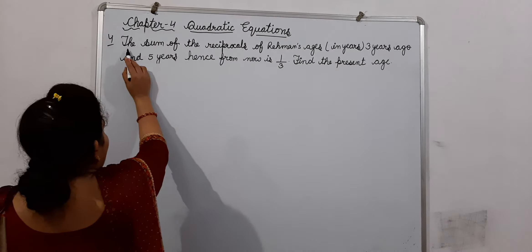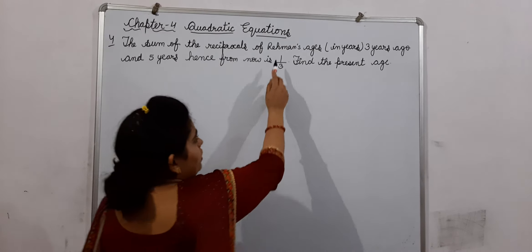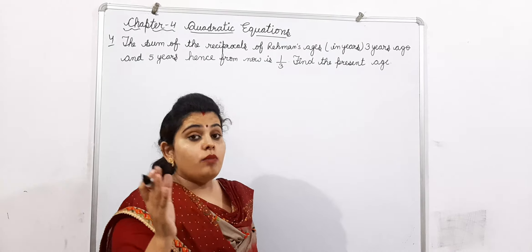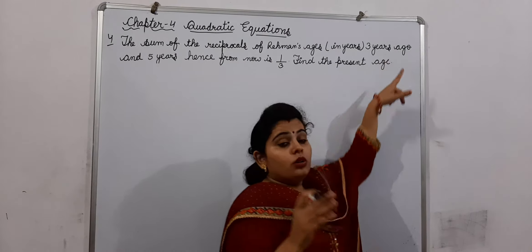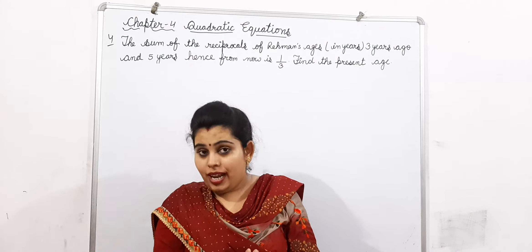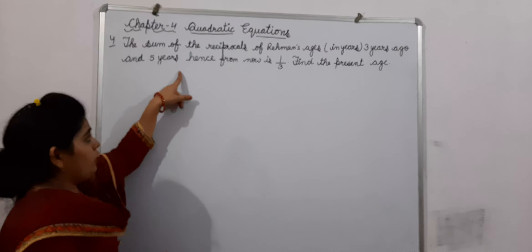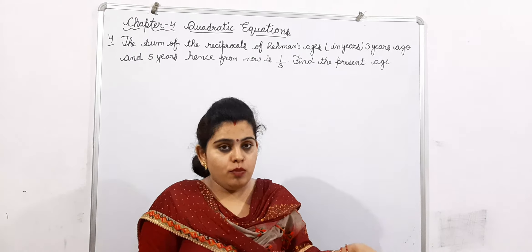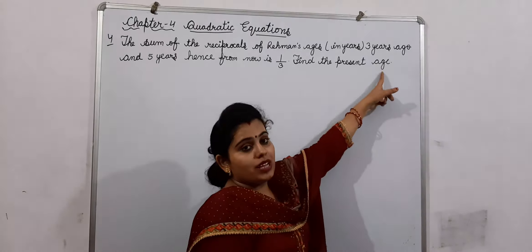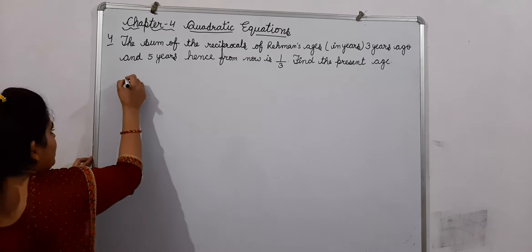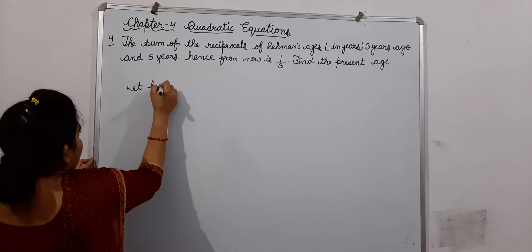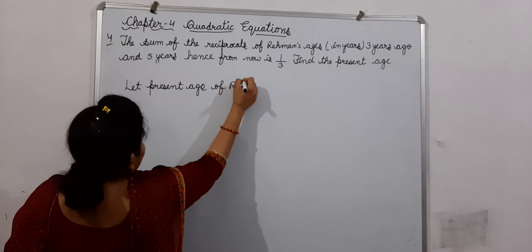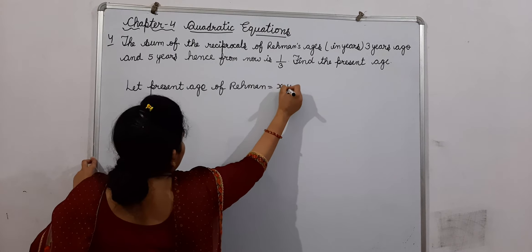What is given in this question? The sum of the reciprocals of Rehman's ages in years is given. His age 3 years ago and 5 years from now are considered. So, first of all, let the present age of Rehman be equal to X years.